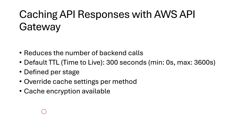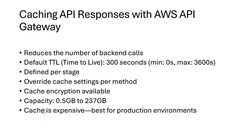The capacity of the cache usually ranges from 0.5 GB to 237 GB of data, so you can scale it based on your needs. Keep in mind that caching can be expensive. It's typically worth the cost in production environments but may not be necessary in development or testing stages. So use caching in production where it's worth it.